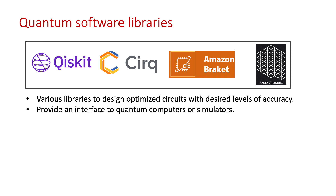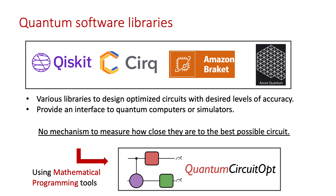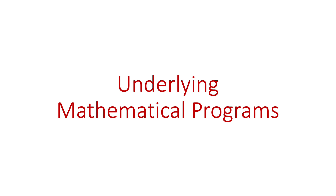These packages provide circuits for an input target unitary, an interface to write and manipulate circuits, and can run them on real-time quantum computers or simulators. However, while these libraries provide good quality circuits, they do not provide any mechanism to measure how close they are to the best possible circuit. The community is hence lacking both methods and software packages that can provide theoretical guarantees on solution quality. This is the gap we are filling using mathematical programming and optimization-based methods, with the proposed package QuantumCircuitOpt, ideally applied on medium to small scale circuits on NISQ-type devices.